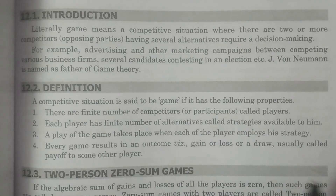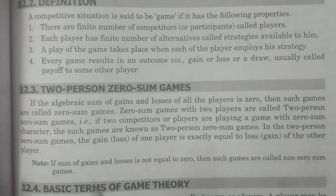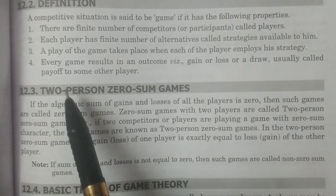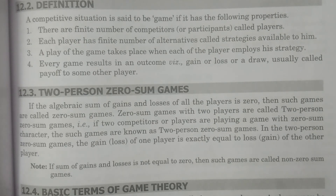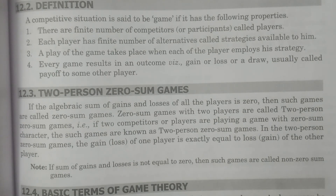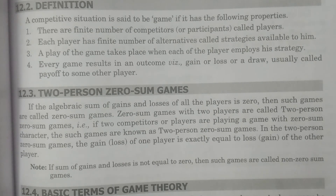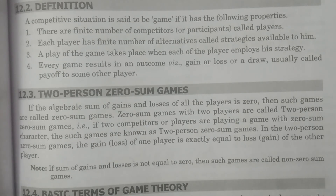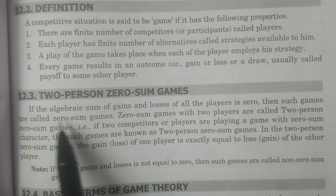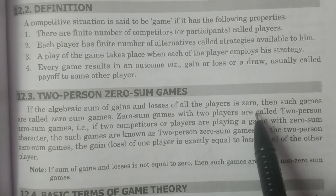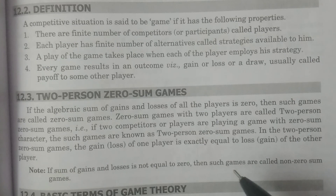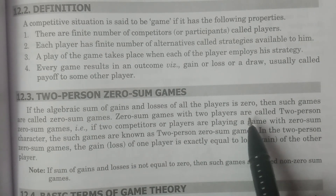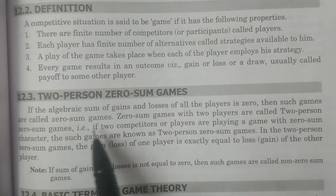That is called a game. Next, the important definition: two-person zero-sum game. For example, take two players — player one and player two. Player one's gain and player two's loss: if player one gains ten rupees, then player two loses ten rupees. The algebraic sum of gains and losses of all players is zero — that is the definition of a zero-sum game. Ten minus ten equals zero.